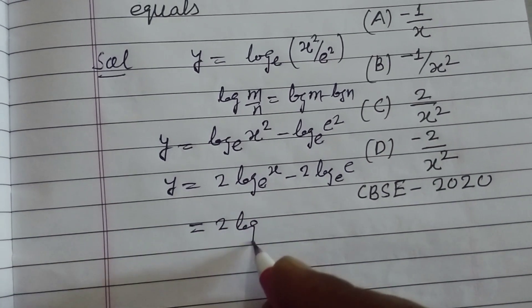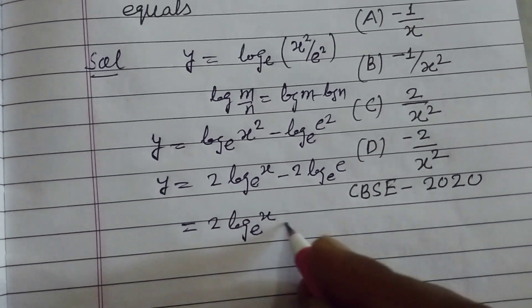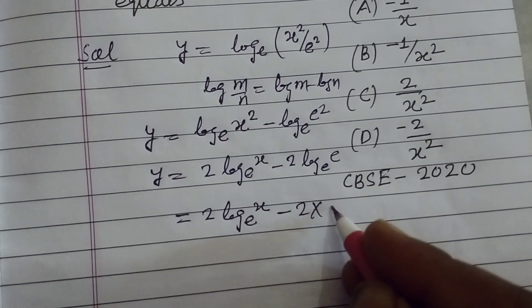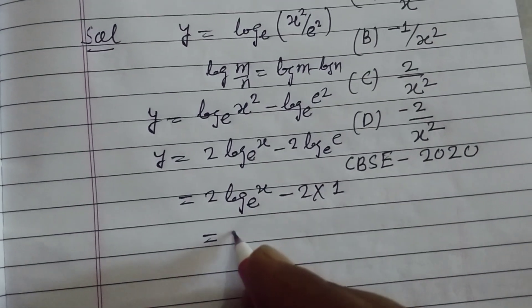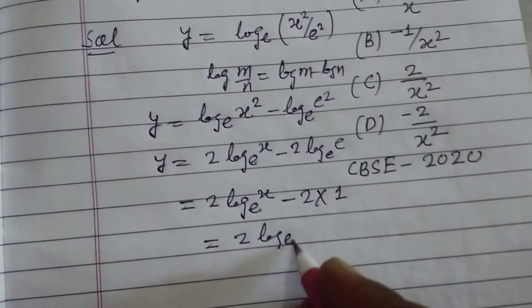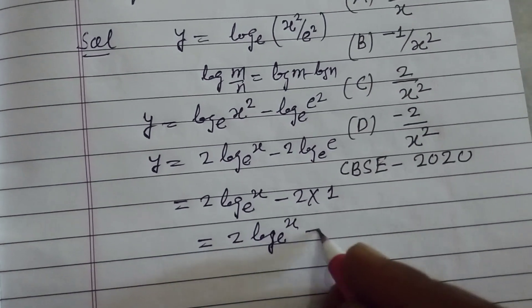So 2 log base e of x, and log base e of e, this is 1. So we got 2 log base e of x minus 2.